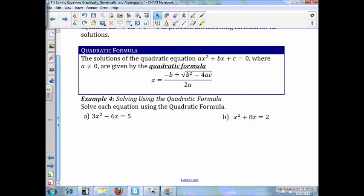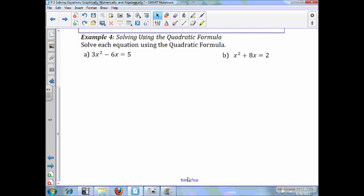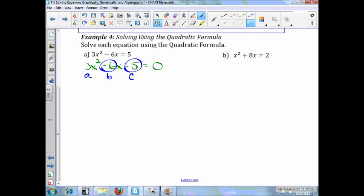Now again, in example 4 here, we're going to be using the quadratic formula. So here we go. First things first, the first thing we have to do is get everything to one side and set it equal to 0. So 3x squared minus 6x minus 5 is equal to 0. That means 3 is a, b is negative 6,